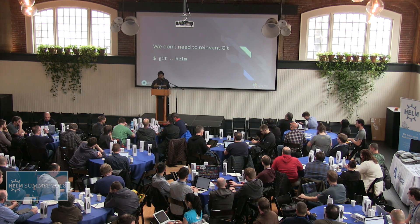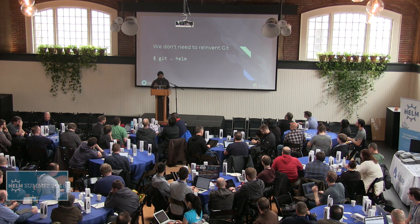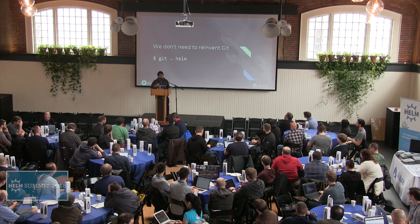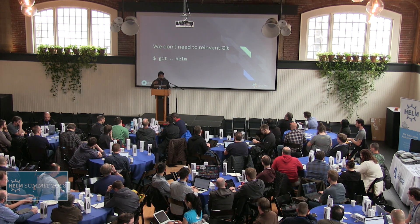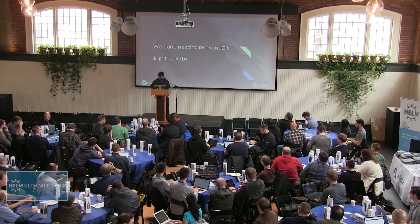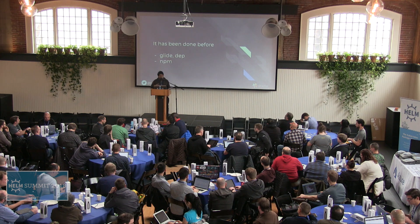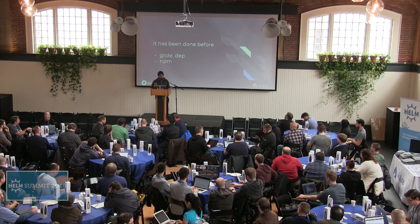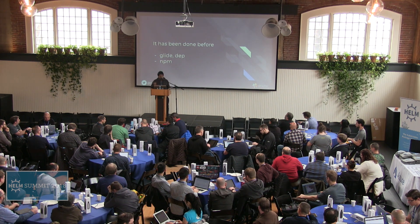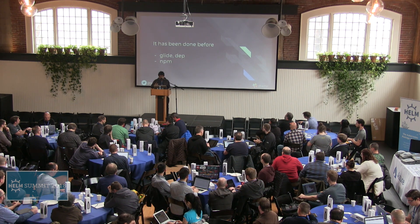We don't need to reinvent Git. Helm is sort of fighting with what Git already does. Helm install in a GitOps workflow is like git commit and git push; Helm rollback is like git revert. I felt like we've done this before — especially in Go development. My experience with Go or Node.js development tools like Glide and Dep — those kind of tools already exist. Can we do something simpler from that perspective?